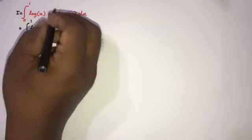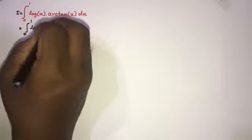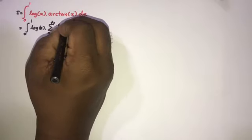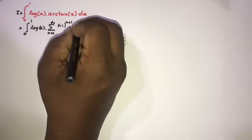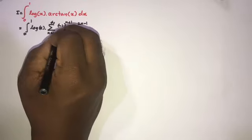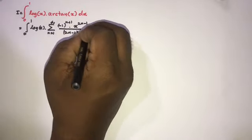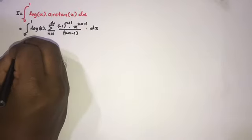Instead of arctan of x, we can use its series expansion: the infinite sum from n=1 to infinity of (-1)^(n+1) times x^(2n-1) over (2n-1). We then switch the integral sign and sigma notation.